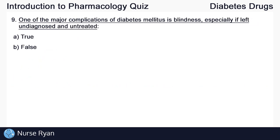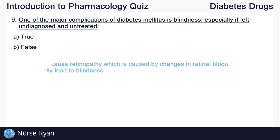Our last question, number nine: one of the major complications of diabetes mellitus is blindness, especially if left undiagnosed and untreated. The right answer here is true. Diabetes can cause retinopathy, which is caused by changes in retinal blood vessels, which can eventually lead to blindness.